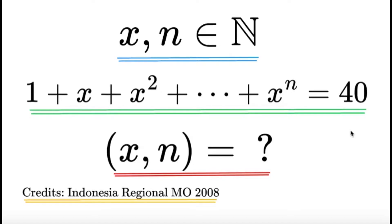Hello, hello! It's Dumplet here. Here's an item on number theory. x and n are natural numbers such that 1 plus x plus x squared plus so on and so forth until plus x raised to n is equal to 40. Find all possible ordered pairs x comma n. Credit to the Indonesia Regional Math Olympiad back in 2008 for this item.